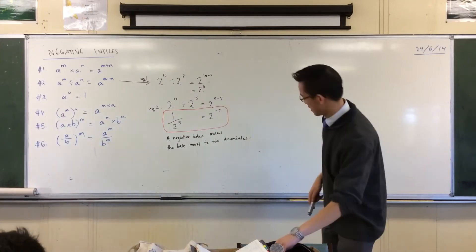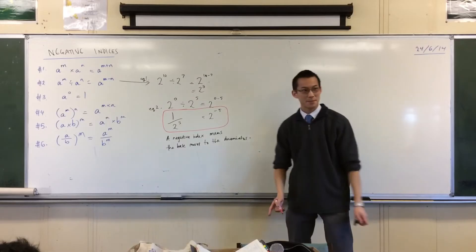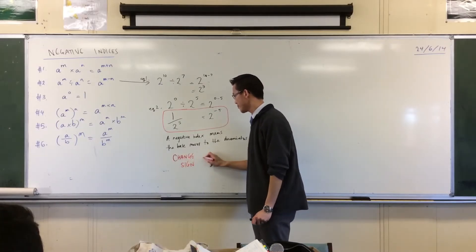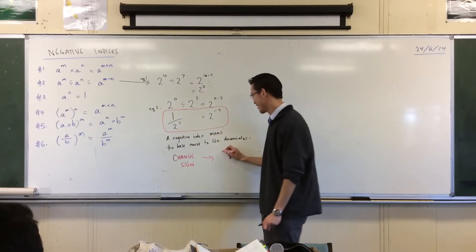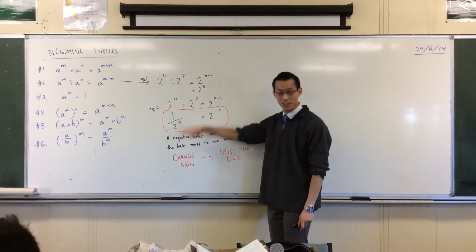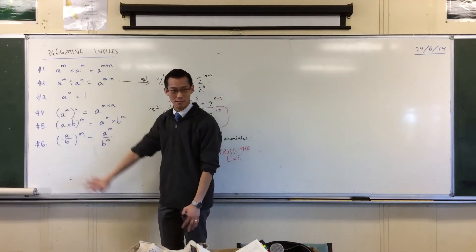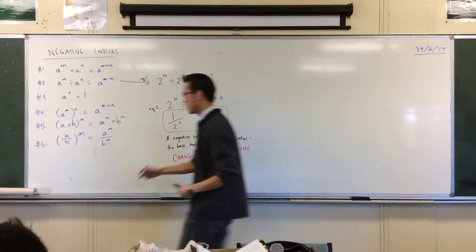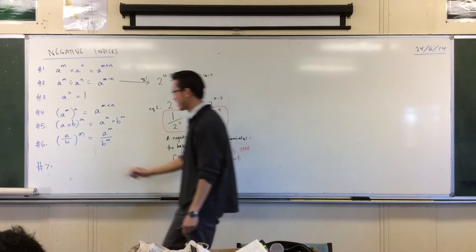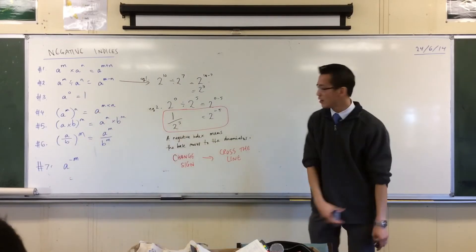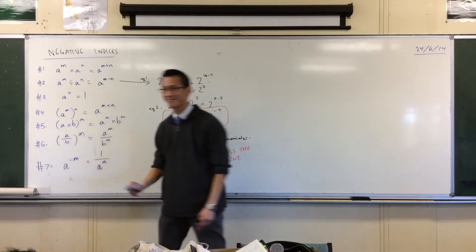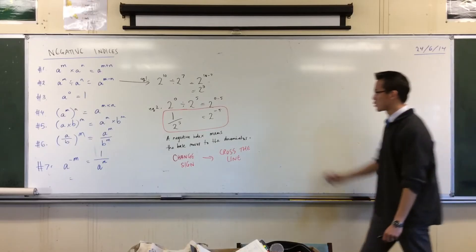There's a funky rhyming way to remember this, which maybe you'll find really cheesy, but hopefully it will help. When you change the sign of the index — when you change the sign — you cross the line. It goes underneath, onto the bottom of the fraction. So that's how you can remember: when I see 2 to the power of negative something, it's actually a fraction. So, just like over here, these are not examples, they're the laws. For any number, we're going to do number 7 now, and it's come from number 2 and number 3 together. If I have a negative index — a negative power — well, I've changed the sign, so I'm going to cross the line.